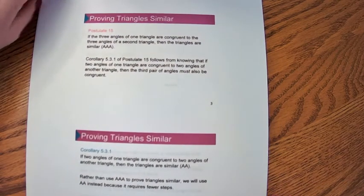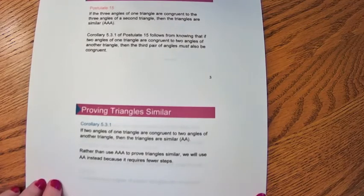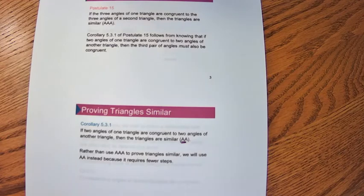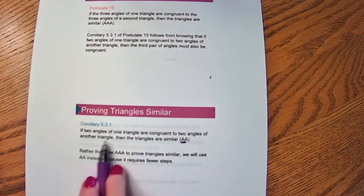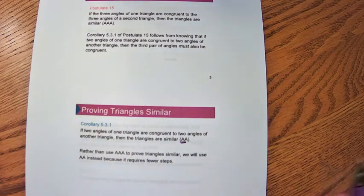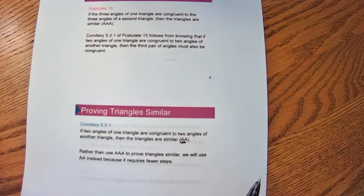However, since the sum of all angles must add up to 180 degrees, we really do not have to prove all three angles are congruent — we only have to prove two. If two of them are congruent, the third one has to be equal as well. So we're going to call that AA, angle-angle. If two angles of one triangle are congruent with two angles of another triangle, they must be similar.